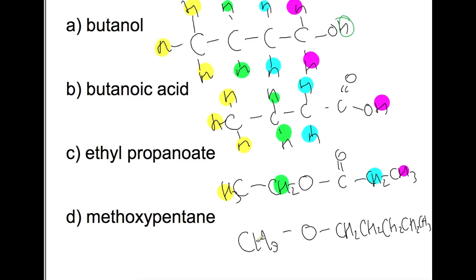Now having a look at methoxypentane. We've got our CH3 attached to an oxygen, so the CH3 on the other side is not identical. We've then got a CH2 attached to this oxygen, which means that CH2 is different. That CH2 is in a different environment to the next one, and that one is in another environment still. So here we would end up with six different environments.